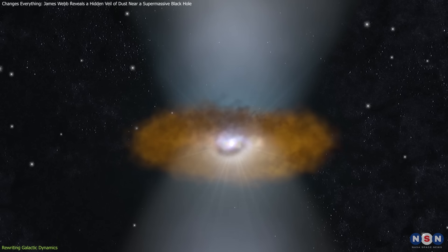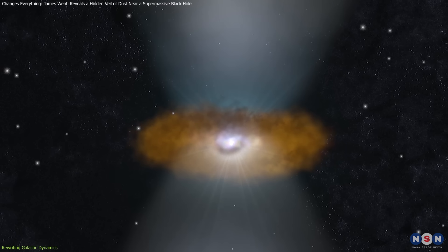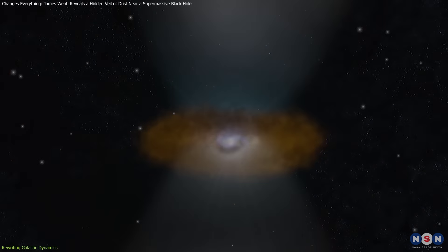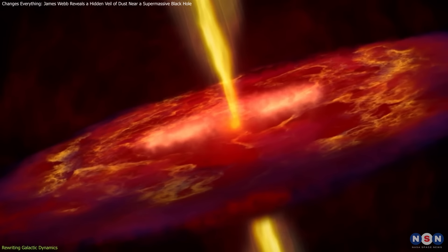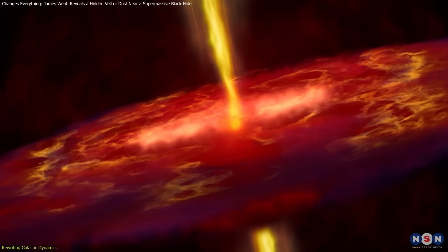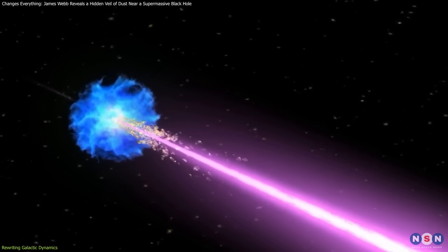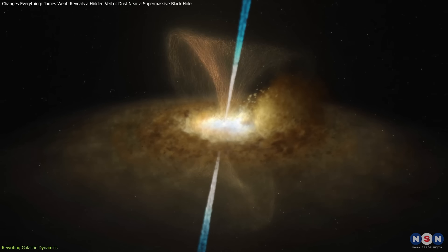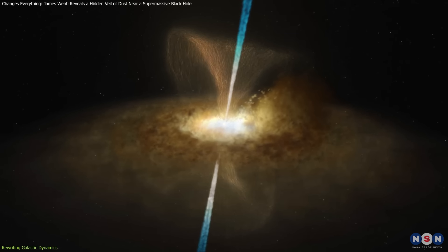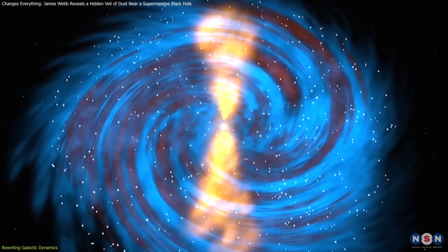while Type 2 AGN are seen edge-on, with the torus obscuring much of the activity. The polar dust exists separately from the torus and interacts with relativistic jets that can extend hundreds of millions of light-years into space. This interaction between jets and polar dust has significant implications for our understanding of AGNs and their influence on host galaxies.